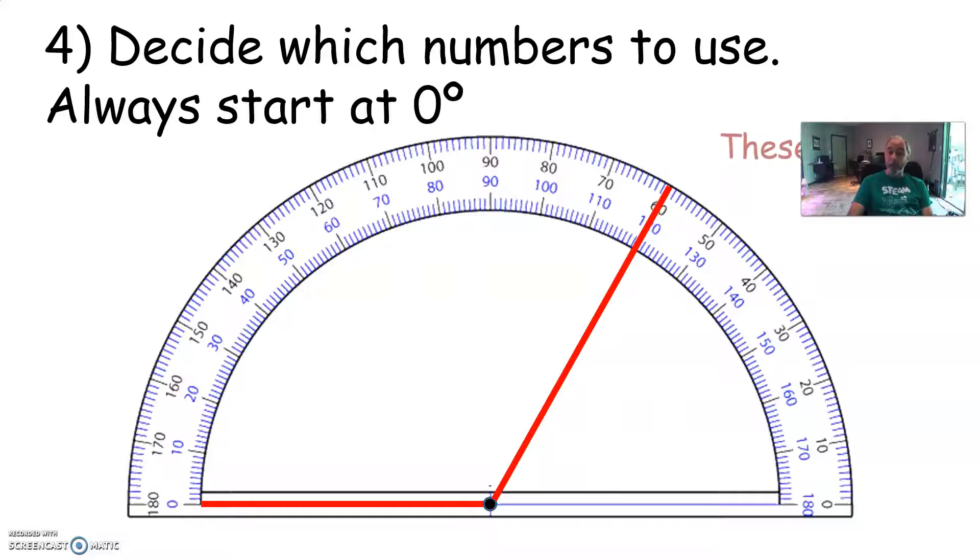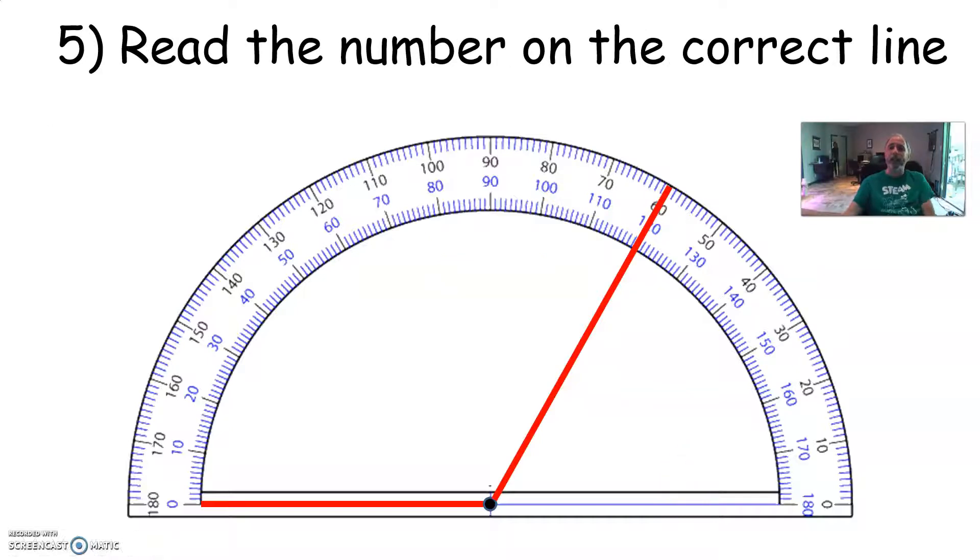Which set of numbers should I use? The top row or the bottom row? That's right. I want to use the bottom row because this is the zero. This base of the angle is pointing to zero. So I want to use the blue numbers for the bottom row of the protractor. Next and finally, read the number on the correct line. So look at the other side of the angle, and it's pointing right here to this number, and it's behind the red line. 110, 120, 130, so this must be 120 degrees. You're so smart. You got this.